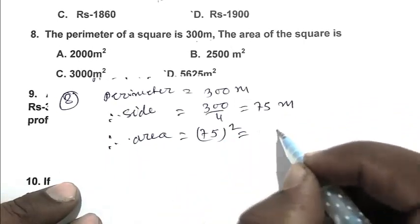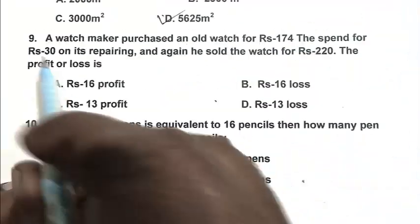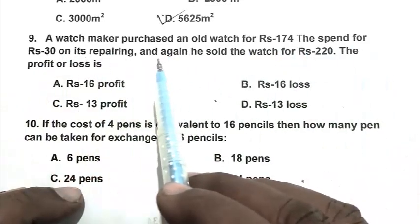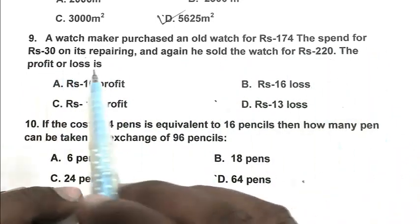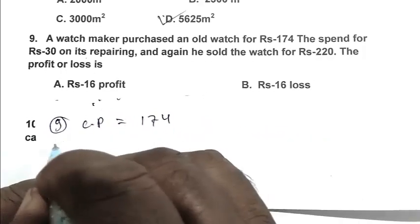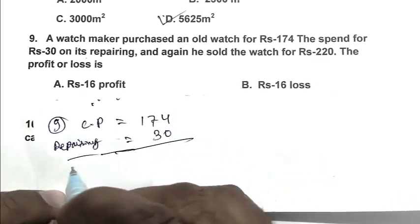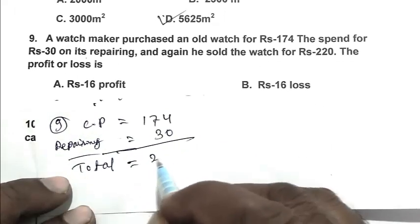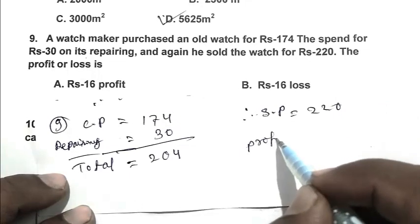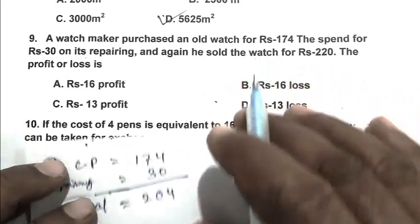Question number nine: a watchmaker purchased an old watch for rupees 174. He spent rupees 30 on its repairing, and again he sold the watch for rupees 220. The profit or loss is. So cost price is 174, repairing cost 30, so total cost 204. Selling price 220. So profit 220 minus 204, that is rupees 16. So A is the right answer.